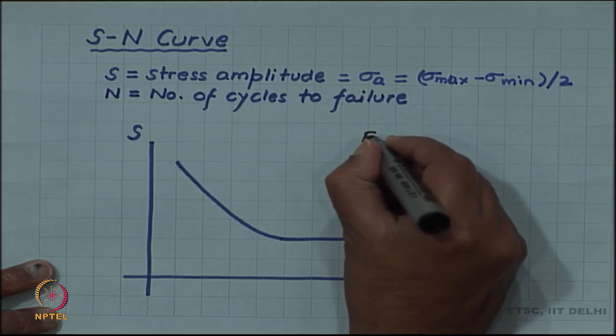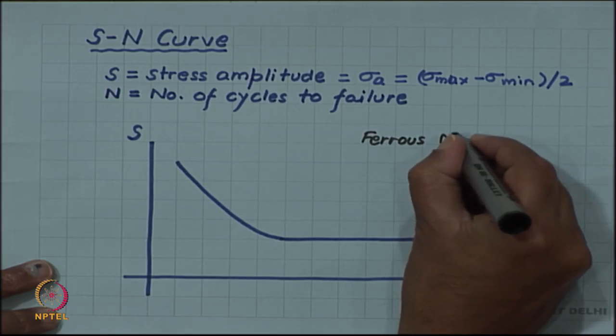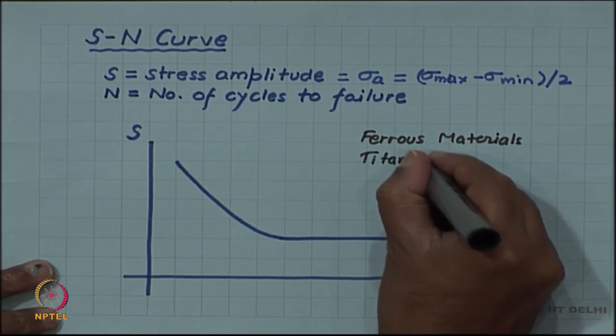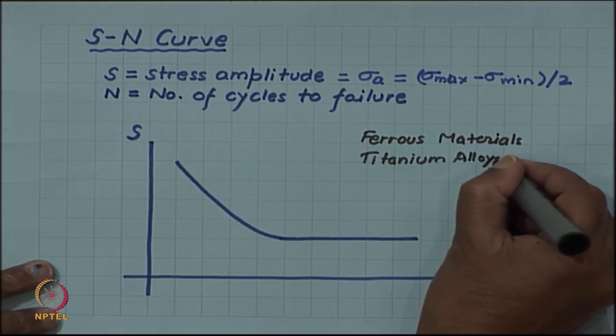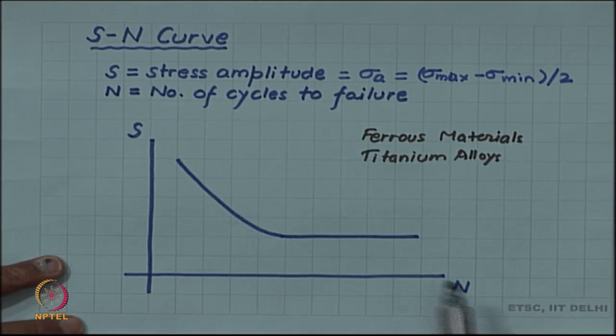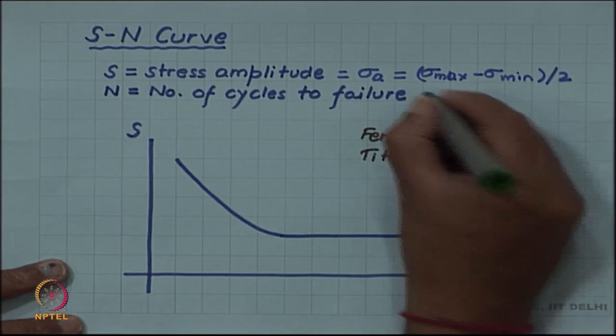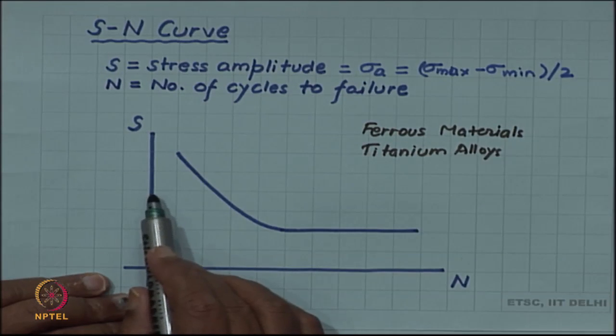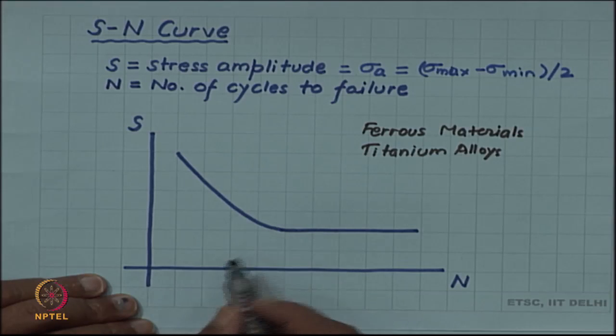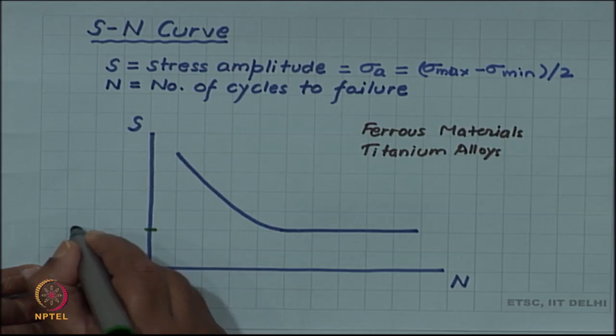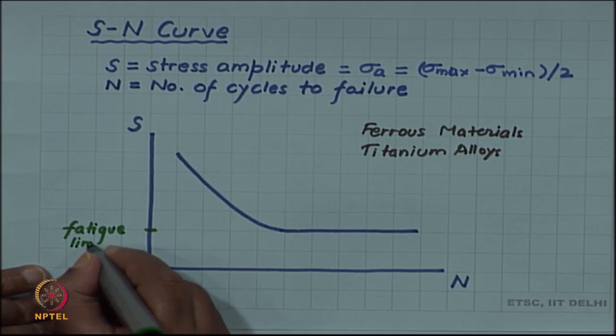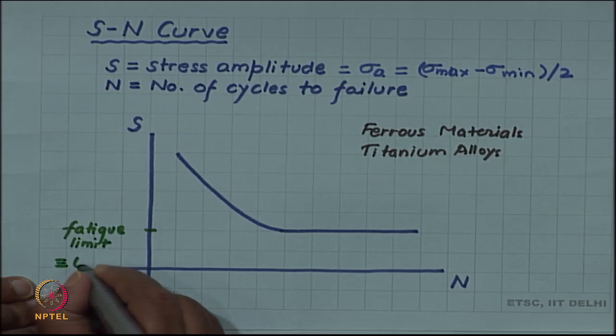S is the stress amplitude, N is the number of cycles to failure. For some ferrous material and some titanium alloys, the number of cycles to failure can also be called fatigue life for that particular stress value. The life of the component keeps increasing as you decrease the stress amplitude, but beyond a certain point which we are calling a fatigue limit or also known as endurance limit...